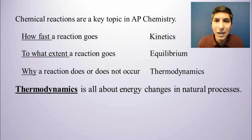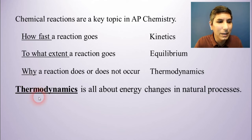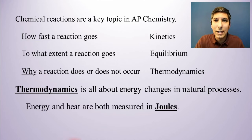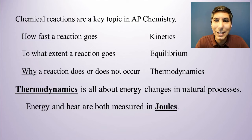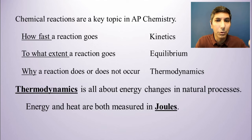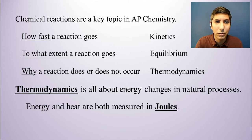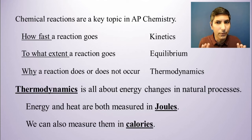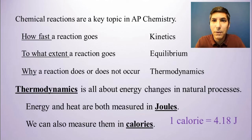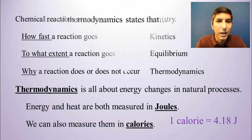This is all about the energy changes that take place in natural processes. The 'thermo' gives us the implication of heat. Energy and heat are both measured in joules — the fundamental unit in the SI framework. In this course, we normally measure energy and heat in joules, but you've probably heard of calories. One calorie is equal to 4.18 joules, so it's a very simple conversion.